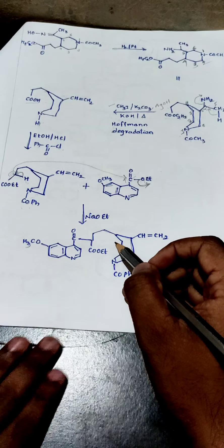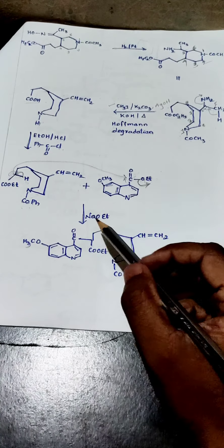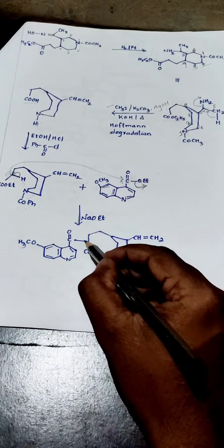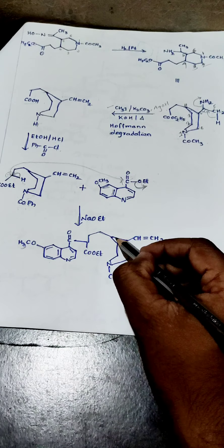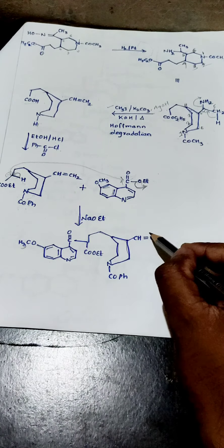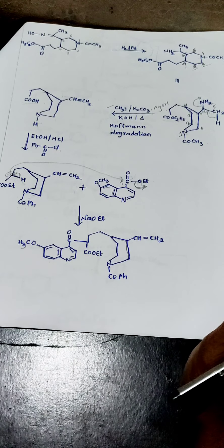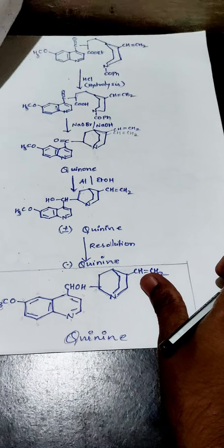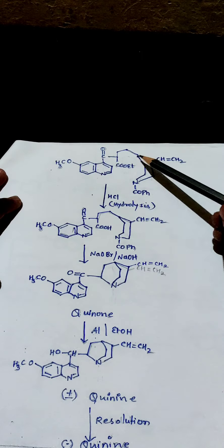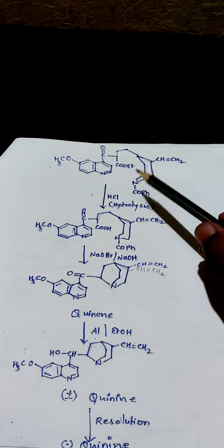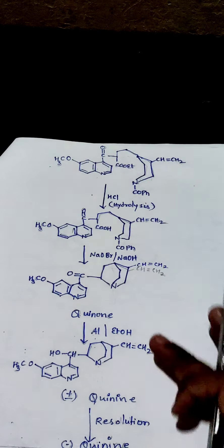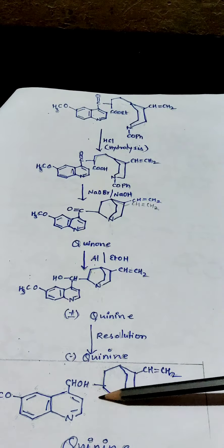Writing this structure as it is — connected to the condensation product — we have: –COOEt here, –CH2CH2– here, and –CH=CH2 as it is. Almost our target structure has been obtained. Now just minor changes remain between this structure and the final quinine structure. I will do hydrolysis — the ester –COOEt is converted to –COOH, and that is the only change in this step.